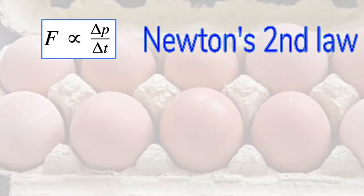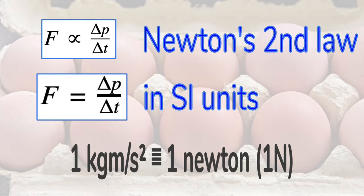We can express it as a formula. The proportional sign means that it is true for any units of force, momentum, and time. But if we use Newtons, kilograms, meters, and seconds, then the force is equal to the rate of change of momentum.